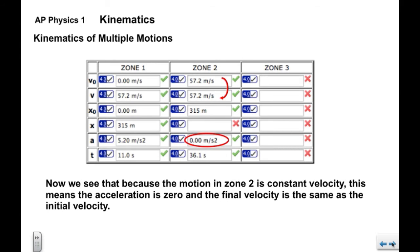Now we also know, because in Zone 2 we have constant velocity, we know that the acceleration is zero. And we know that the final velocity and the initial velocity are the same. So we can take that 57.2 meters per second, transfer that here. Now we certainly have enough to solve the problem.